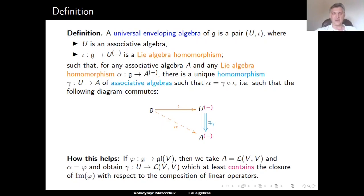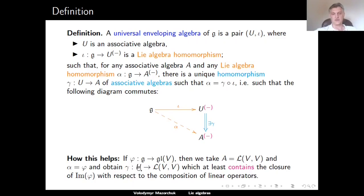If phi is a representation of G — meaning a Lie algebra homomorphism from G to the Lie algebra GL(V), which is the Lie algebra associated to the associative algebra of all linear endomorphisms of V — then we can take alpha to be phi and use the universal property to obtain a homomorphism gamma of associative algebras from U to End(V), such that phi equals gamma composed with I. In this way, the image of U under gamma will contain the image of phi and will be closed with respect to composition of linear operators, simply because gamma is a homomorphism of associative algebras.